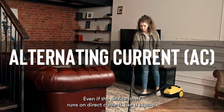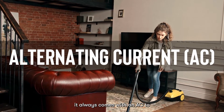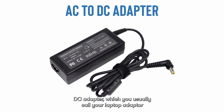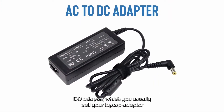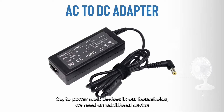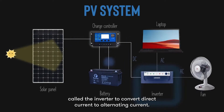Even if the device itself runs on direct current, like a laptop, it always comes with an AC to DC adapter — which you usually call your laptop adapter — to convert the alternating current coming from the grid to direct current. So to power most devices in our households, we need an additional device called the inverter to convert direct current to alternating current.